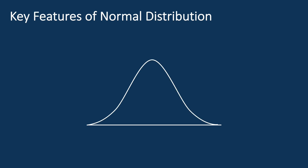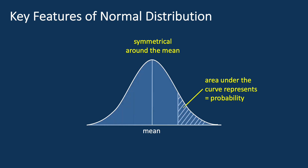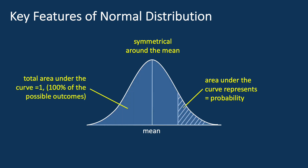There are a few key features of normal distributions that you should know. First, it is symmetrical around the mean, which means that the probability of data points being above or below the mean is the same. Second, the area under the curve represents the probability of observing a particular value within the distribution. Third, the total area under the curve is equal to 1, representing 100% of the possible outcomes.